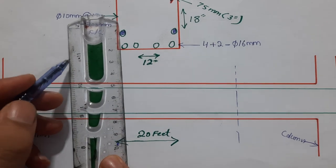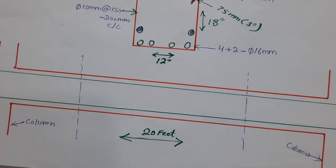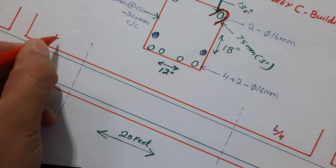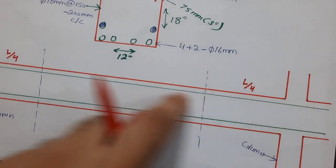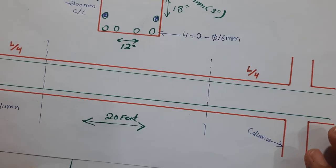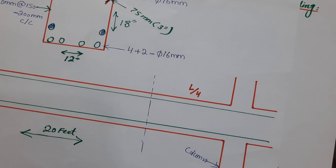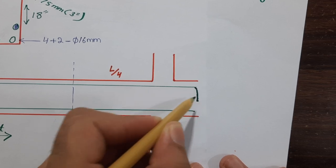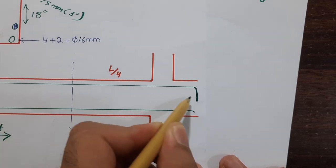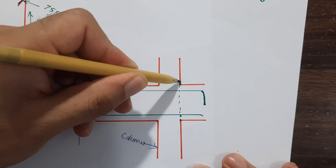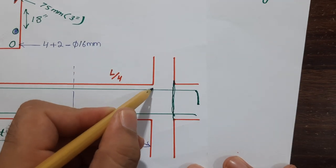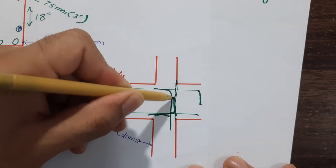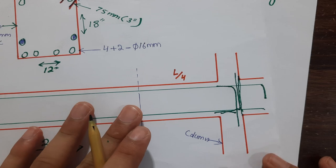Here we have the L/4 section on both sides — each L/4 zone is 5 feet. These are the longitudinal bars at the upper portion and the bottom portion in the tension zone. The longitudinal bars at the ends should have development length: one bar goes downward and the other bends upward. Development length creates a good bond between steel and concrete.